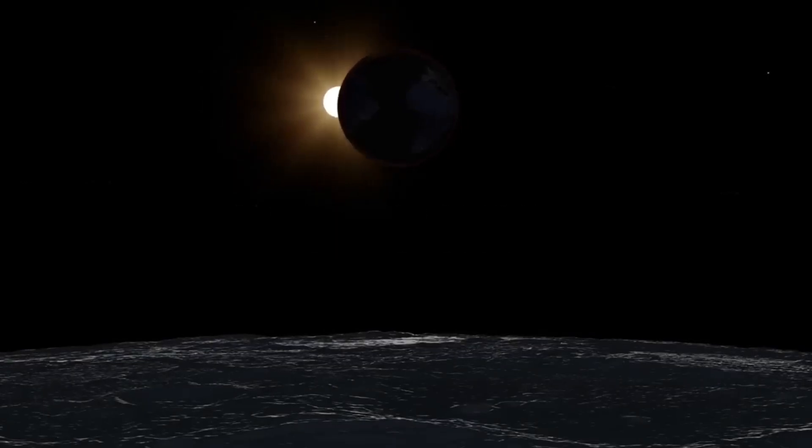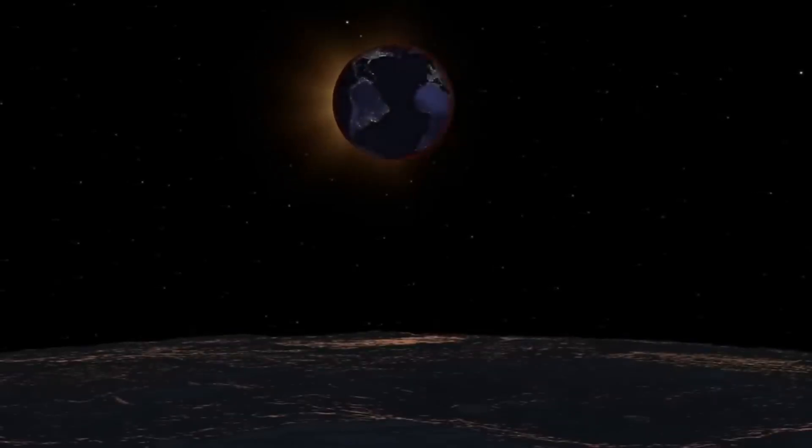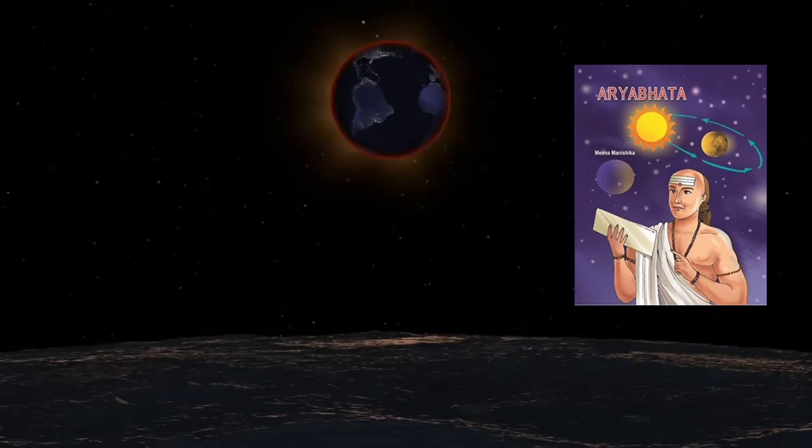This connection between math and eclipses is not new. In the fifth century, the great Indian mathematician Aryabhata explained eclipses scientifically. He showed that they occurred because of earth's shadow.